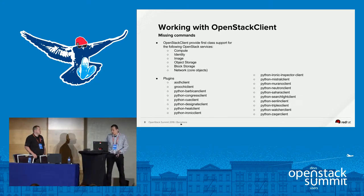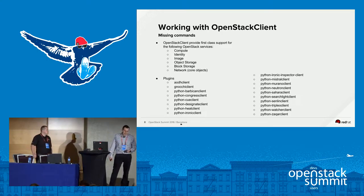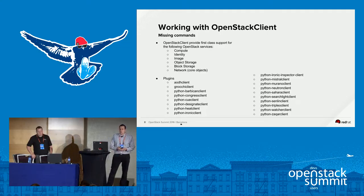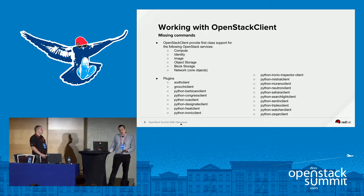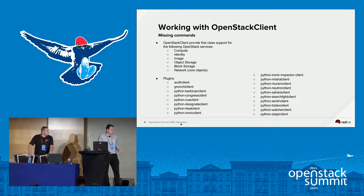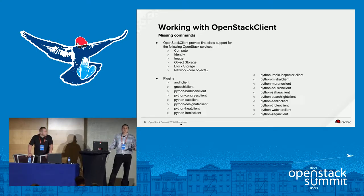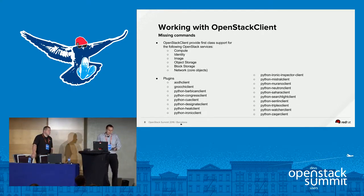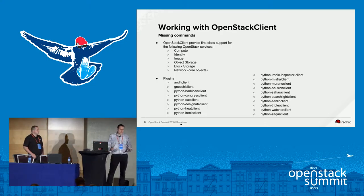Where are all the commands? The answer is yes and no. The OpenStack Client by itself only provides support for what I call the first-class citizens — projects that are part of most OpenStack installations: compute, identity, image, object storage, block storage, and network. Neutron is one of the most growing projects and some newer commands won't be in the core. But there's also a plugin concept — if you're using Ironic or TripleO, there are plugins that enable OpenStack Client support.